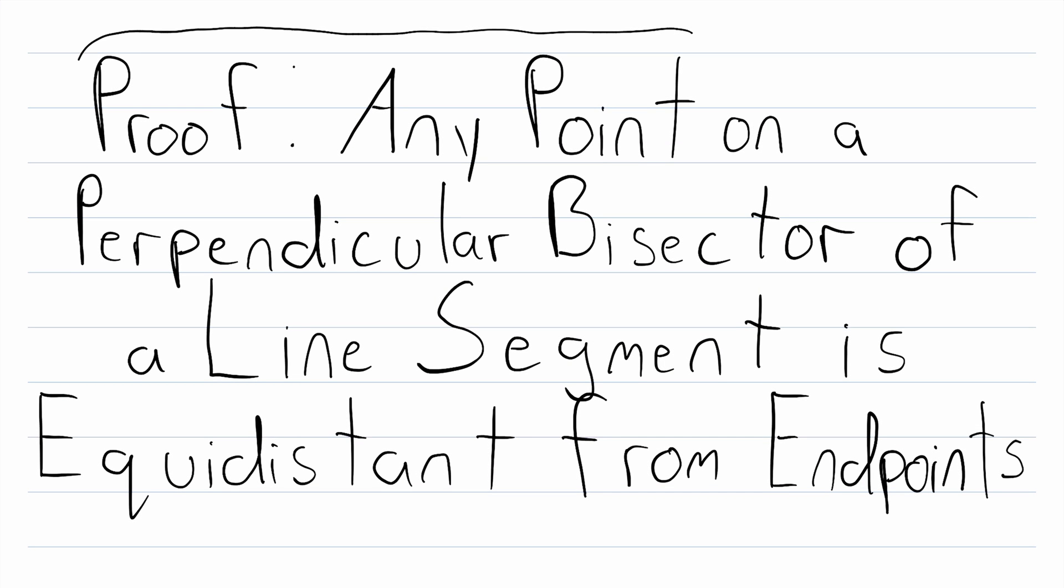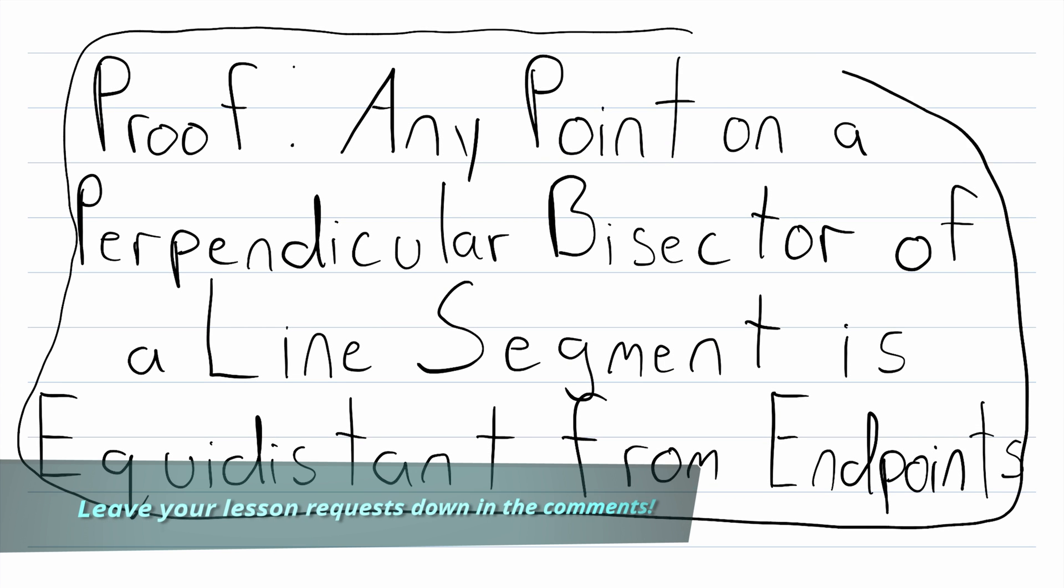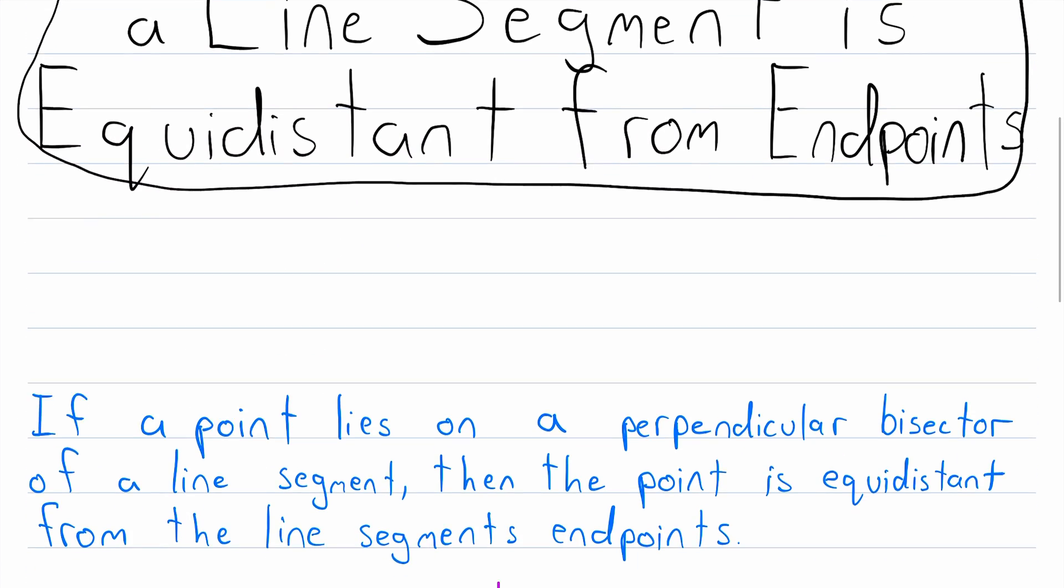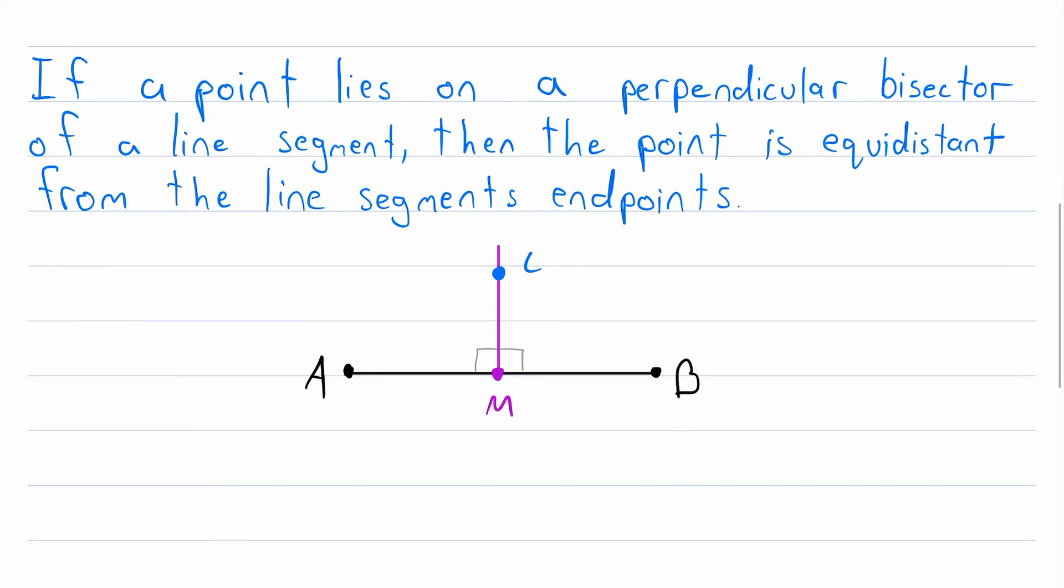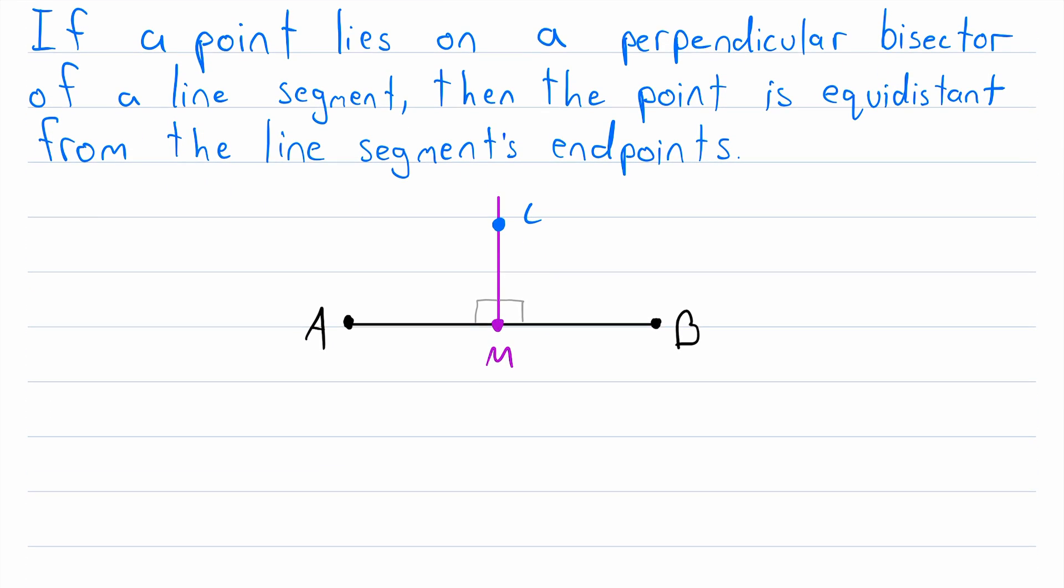How do we prove that any point on a perpendicular bisector of a line segment is equidistant from that segment's endpoints, also sometimes called the perpendicular bisector theorem? We'll be going through a proof of this theorem in today's Wrath of Math lesson.